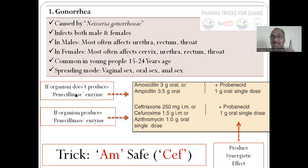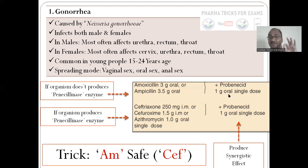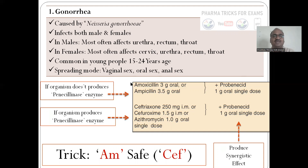If the organism does not produce penicillinase, give ampicillin or amoxicillin. If the organism produces the penicillinase enzyme, then amoxicillin will not work — you have to go for cephalosporins: ceftriaxone, azithromycin, along with probenecid. Probenecid is given because it has synergistic action with penicillins — probenecid prevents the excretion of ampicillin/penicillin, so it is retained in the body longer. The mnemonic is AMSAFE: AM = ampicillin/amoxicillin, SAFE = cephalosporins like ceftriaxone and cefuroxime.